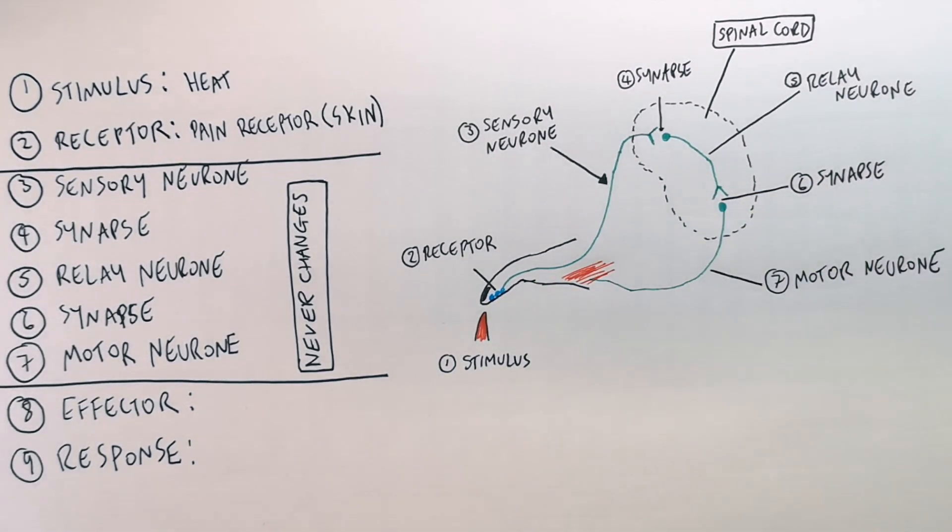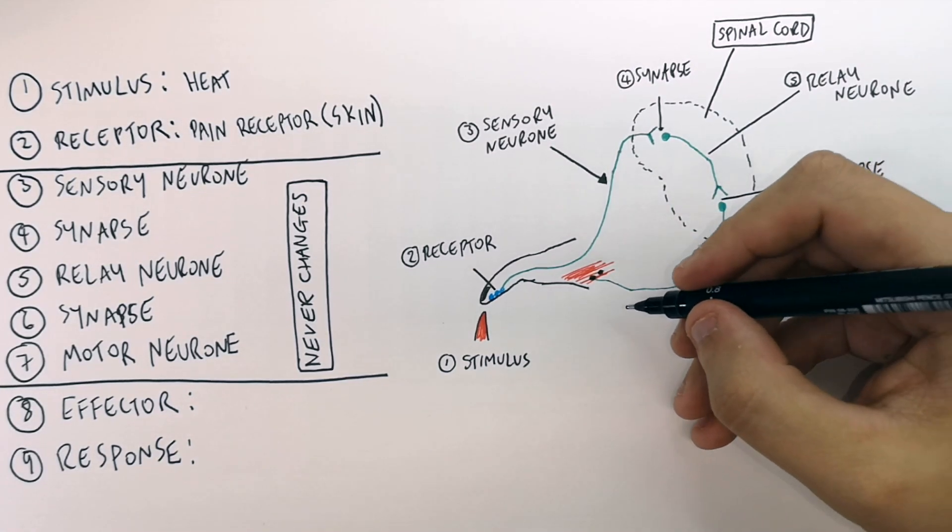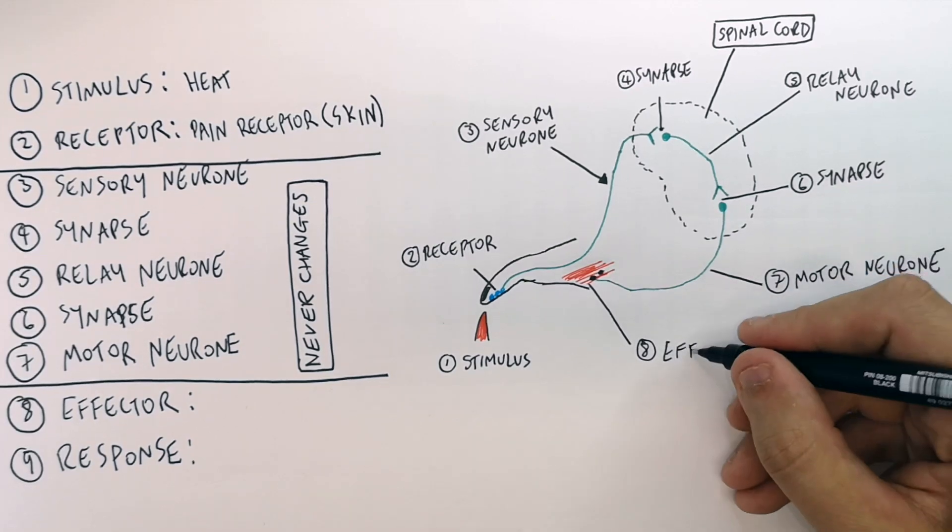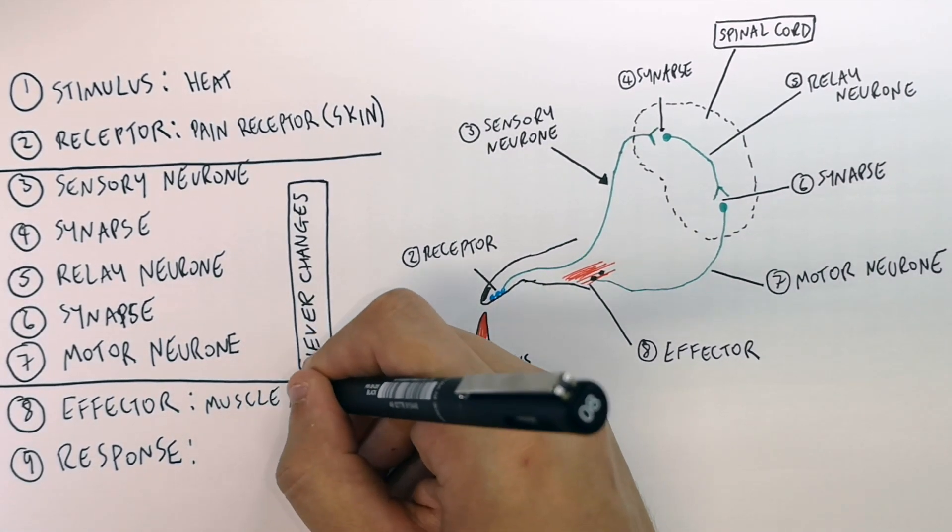An effector can be a gland or a muscle. In this case, it's the muscle in the hand. So the motor neuron is going to connect to the effector, which in this case is the muscle. So the effector.